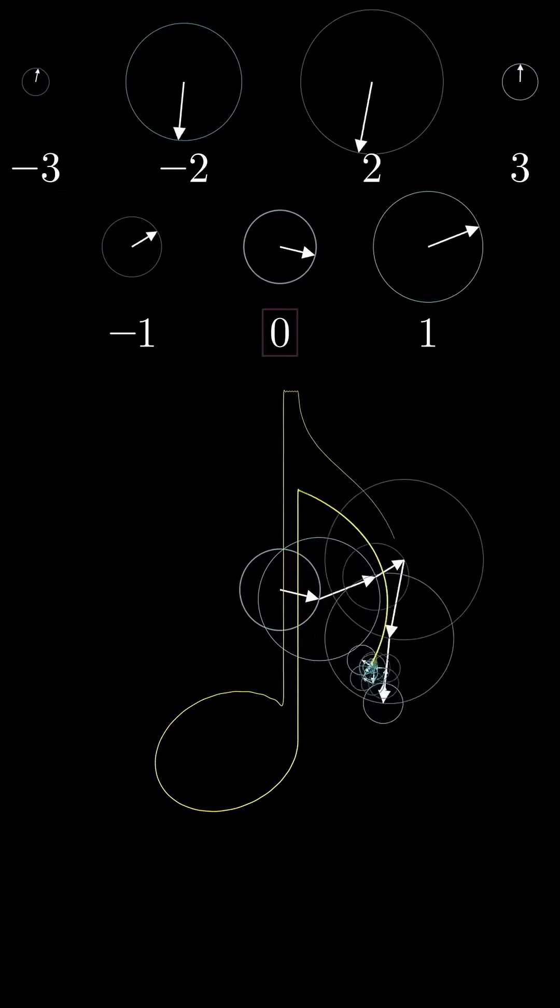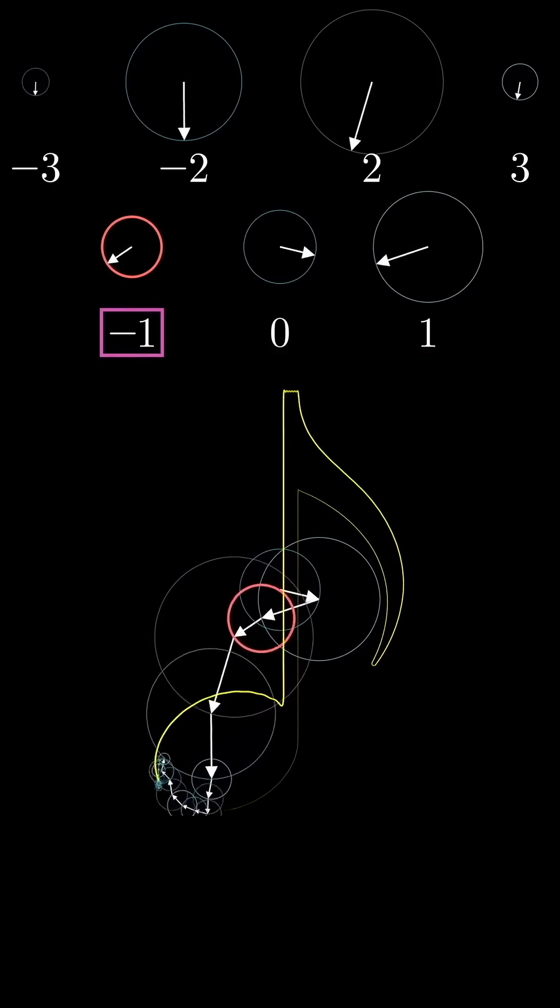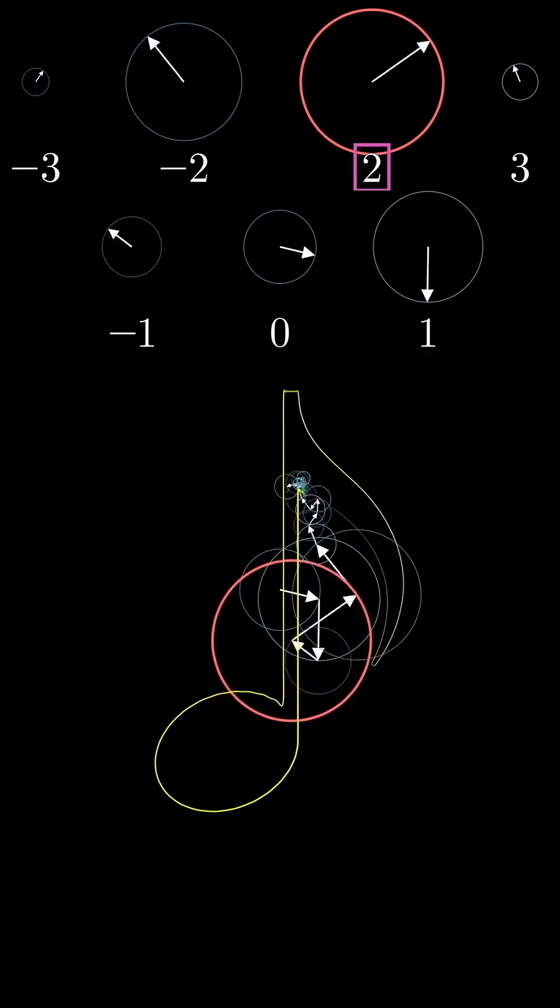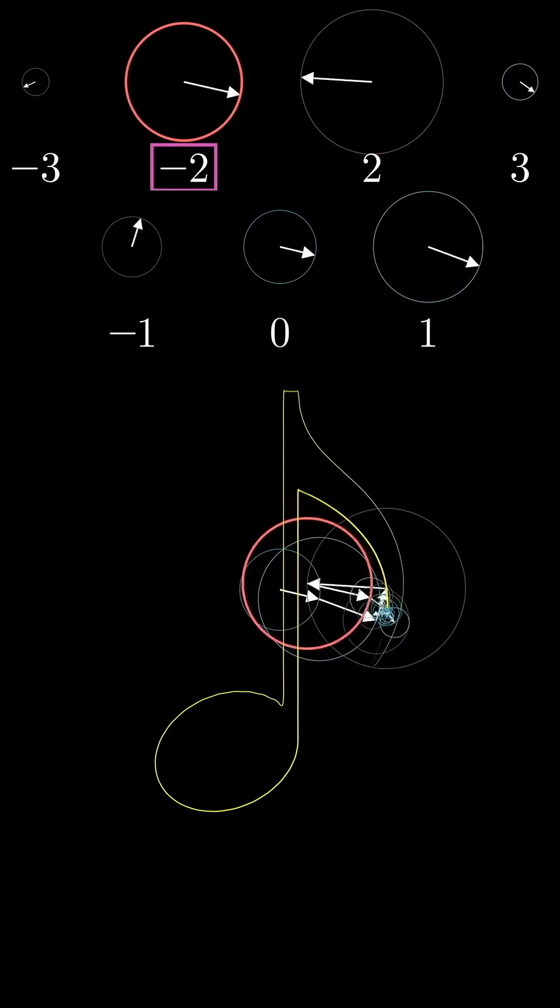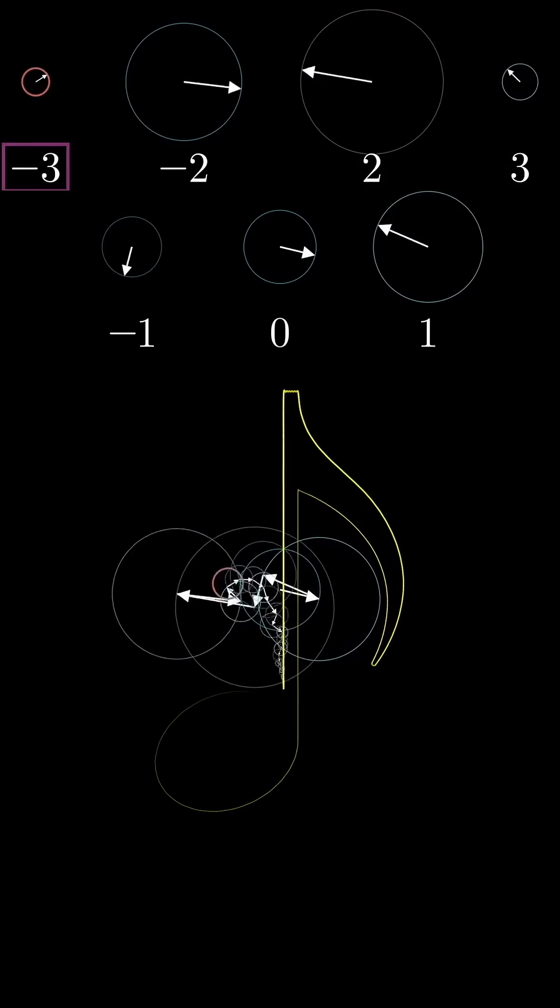Each little vector is rotating at some constant integer frequency, and when you add them together, tip to tail, the final tip draws out some shape over time. By tweaking the initial size and angle of each vector, we can make it draw pretty much anything that we want.